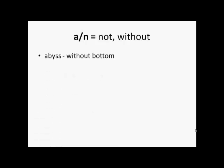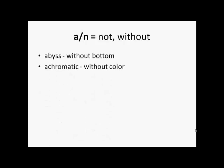Now let us take a look at certain common prefixes, suffixes and word roots. The word 'a' or 'an' when prefixed before a word could mean 'not' or 'without'. So abyss is without bottom, achromatic is without colour, and anhydrous is without water.